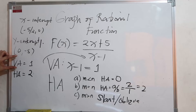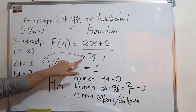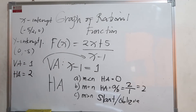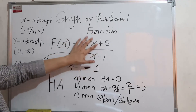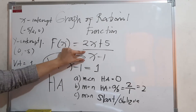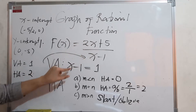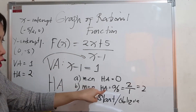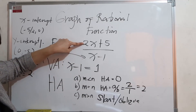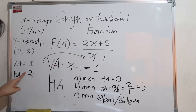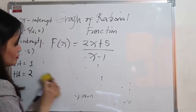To recap: the vertical asymptote is found by getting the zeros of the denominator — here it is 1. For the horizontal asymptote, examine the degrees of numerator and denominator. Since they are equal (both degree 1), apply the second condition: horizontal asymptote equals 2, which is the leading coefficient of the numerator divided by that of the denominator.